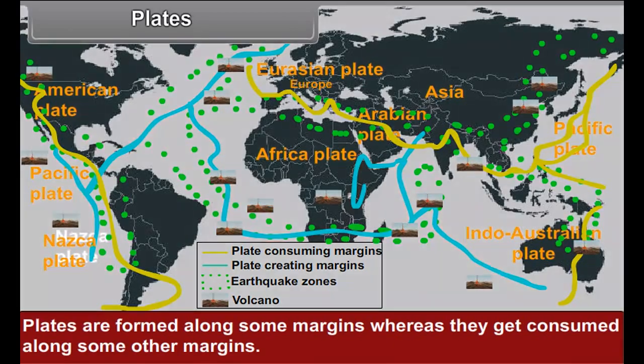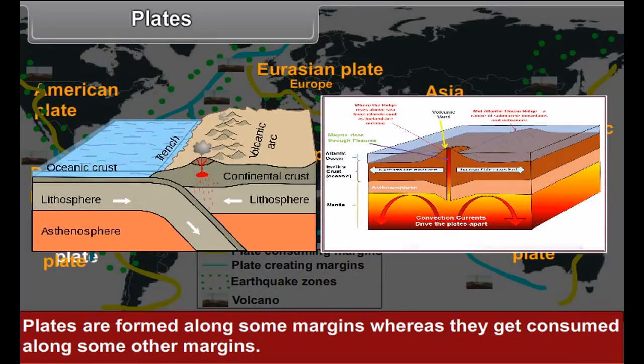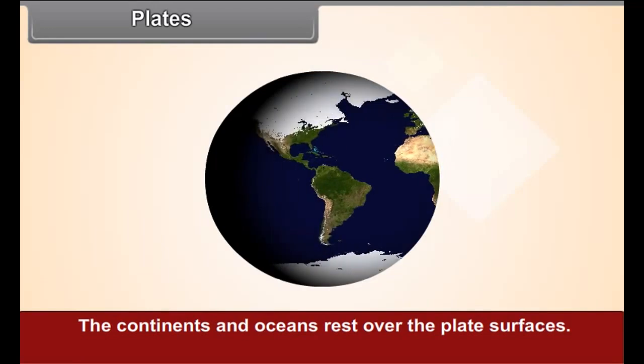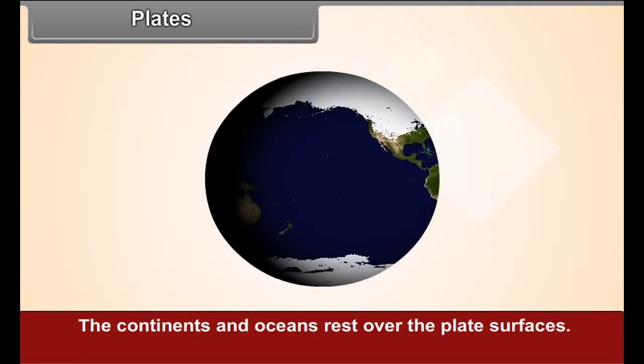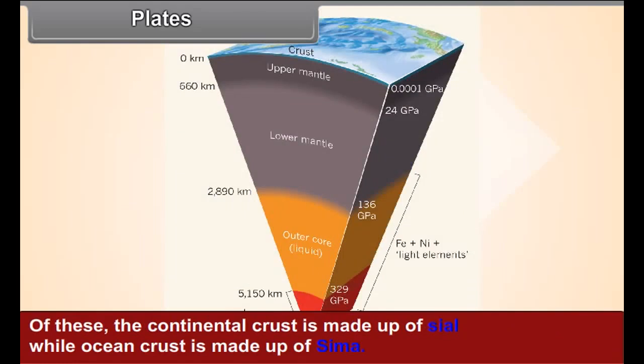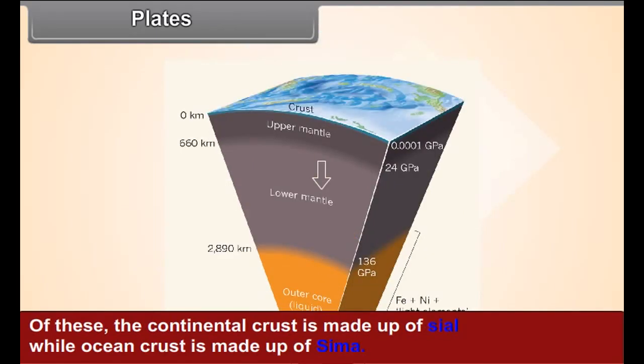Plates are formed along some margins, whereas they get consumed along some other margins. The continents and oceans rest over the plate surfaces. Of these, the continental crust is made up of sial, while the ocean crust is made up of sima.